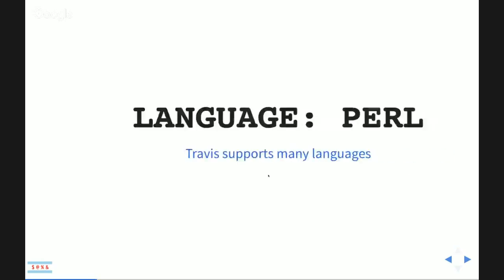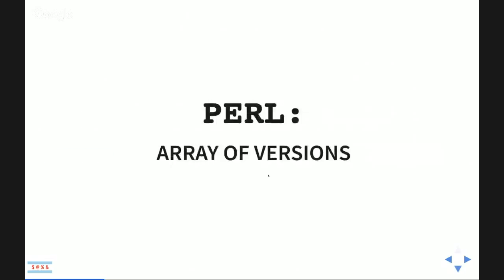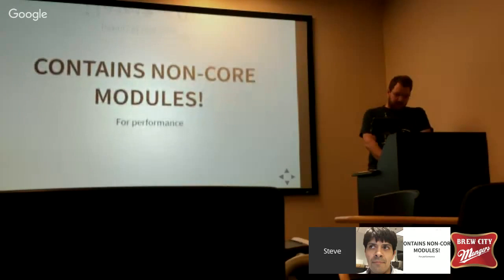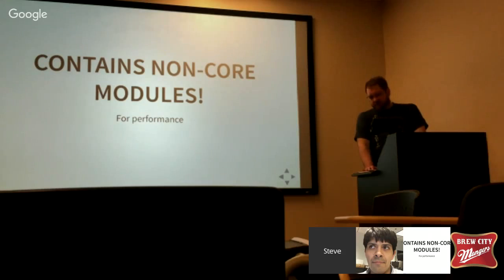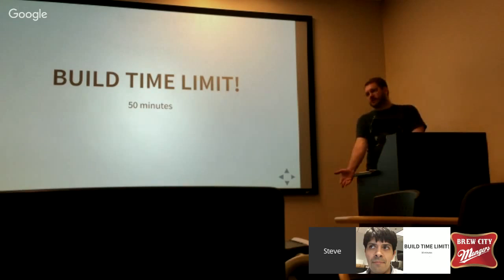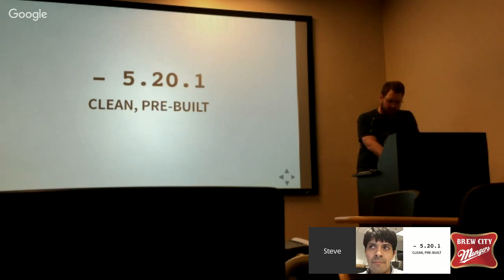The language is Perl. Travis supports a whole lot of languages. Perl gives us the array of versions. The latest 5.20 is pre-built — actually provided by Travis — which means it comes with a bunch of non-core modules. For example, it comes with a version of Dist::Zilla because that is a common thing for people to want. But this can come with some problems. There's also a build time limit: if your builds take longer than 50 minutes, it's going to time out and fail. This is the free version.